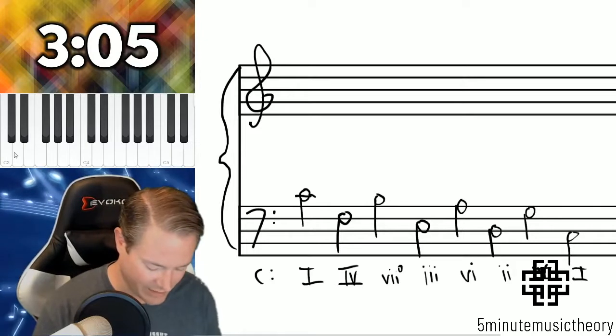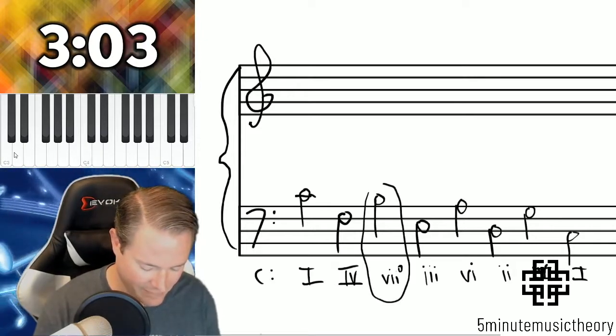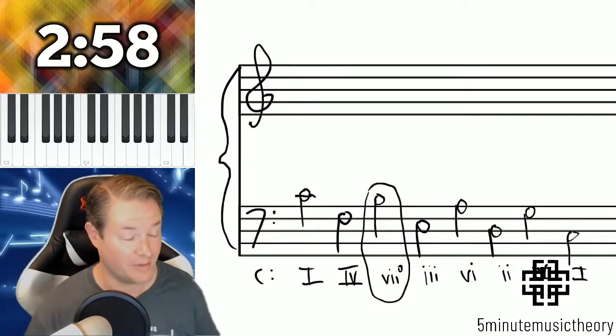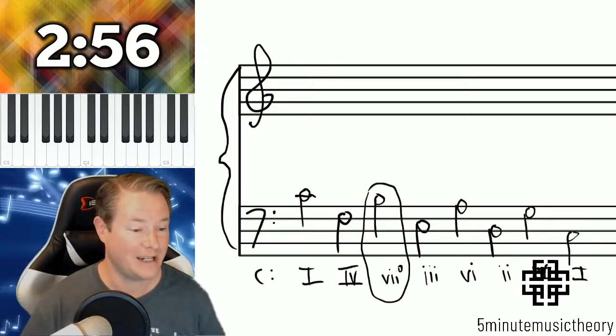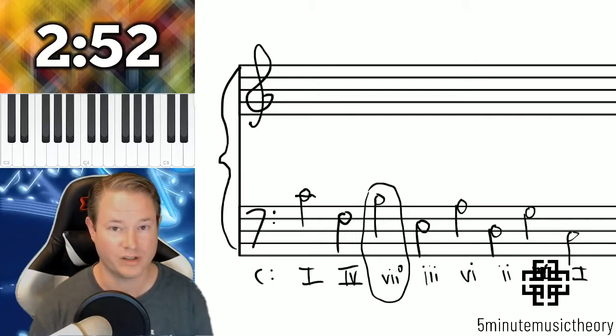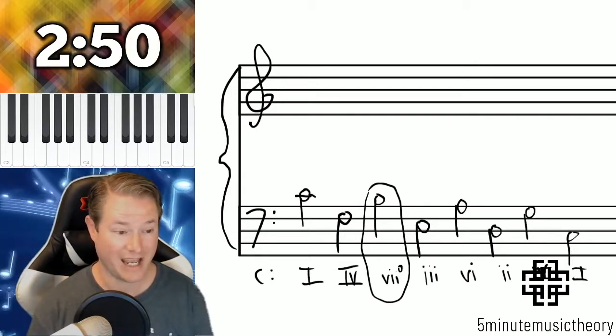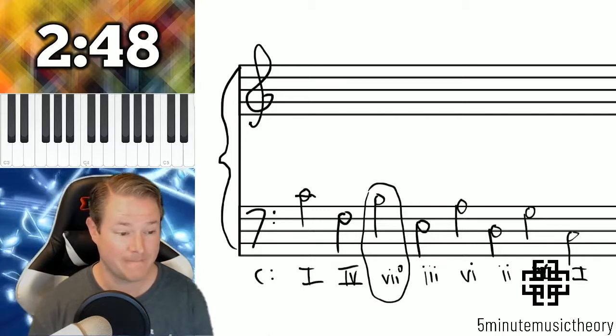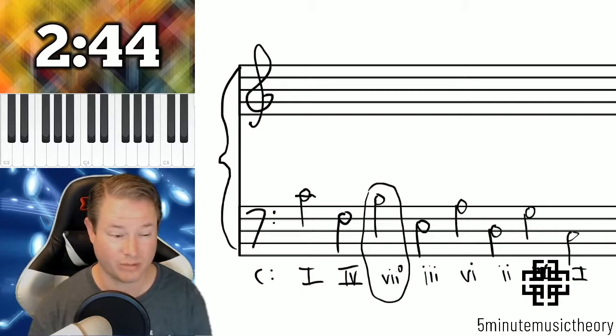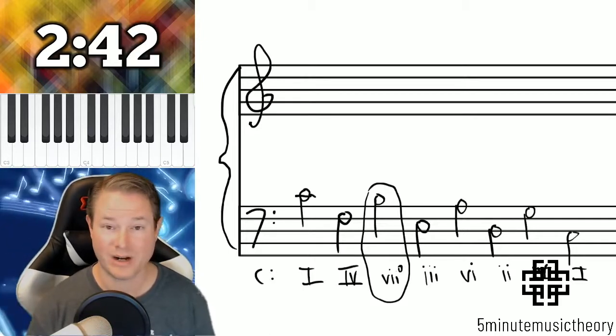Now there is a little bit of an issue here. And different theory texts and theory teachers will deal with this differently. Remember, it's music theory, not music law. But what's happening here is this is a leading tone triad in root position, which is usually a huge no-no. Because you can't have a diminished triad in root position. You also can't have a leading tone triad in root position because you have to double that leading tone. There's a couple ways around this.